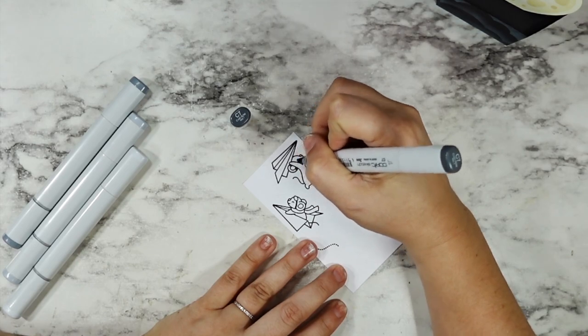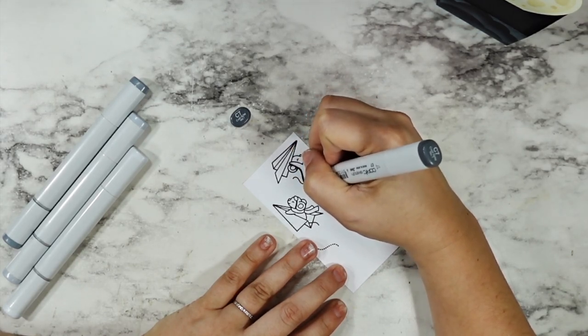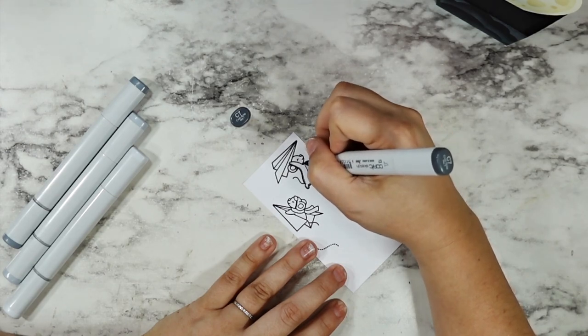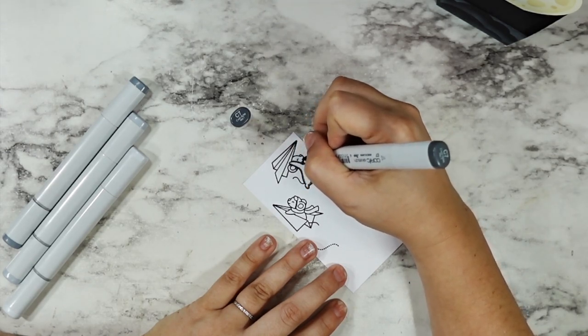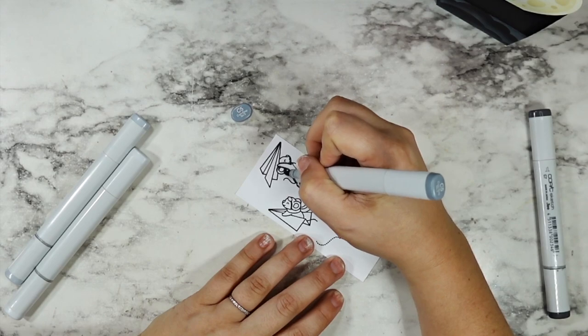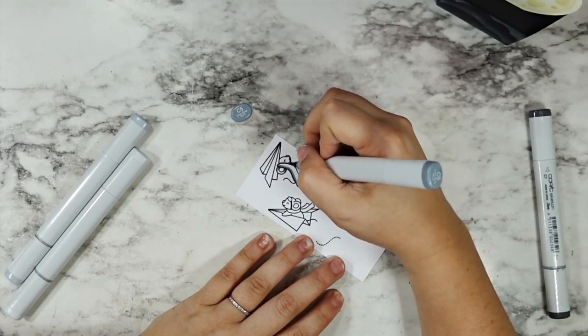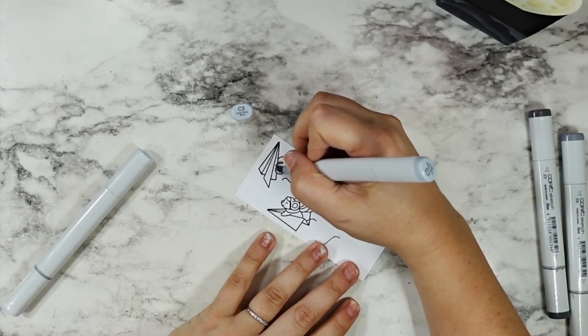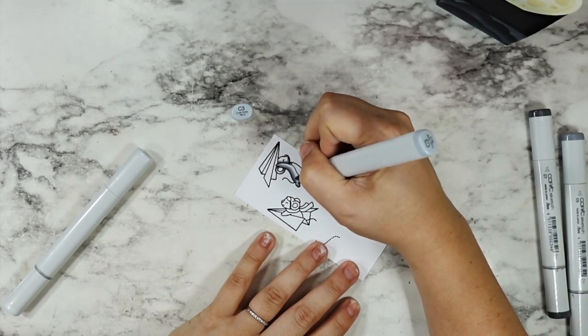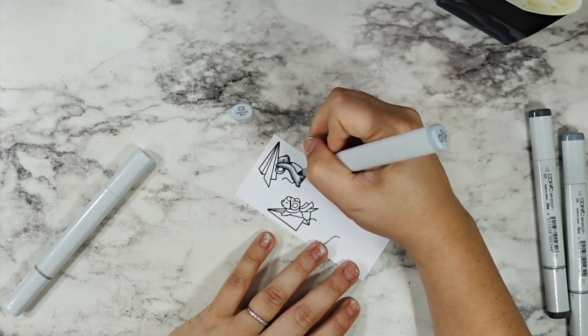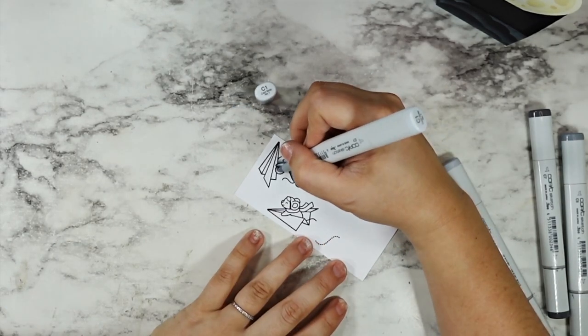And now I'm going in with my Copic markers to color in my little mice. Today I decided to go with cool grays. I just thought this would work really well against those white gray clouds that we created and that really nice warm moon. I wanted a strong contrast so I went with a cool gray and I started with a C7, then went to C5, C3, and C1.